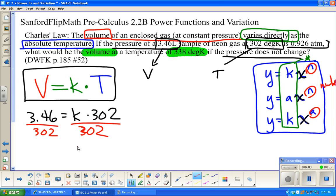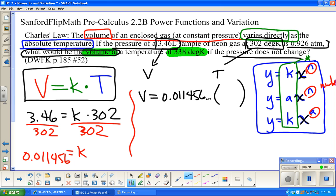K is .011456. The question always comes up, do I have to write all that? No, you don't. But you do have to use what's in your calculator. We do not want to round intermediate answers.